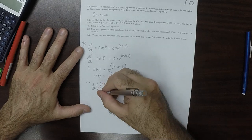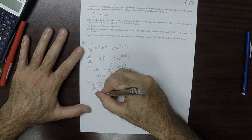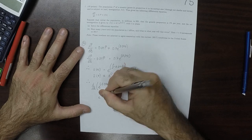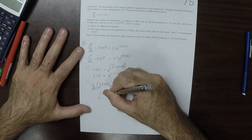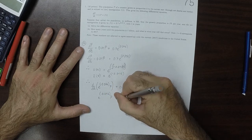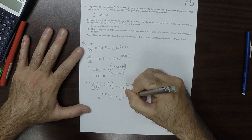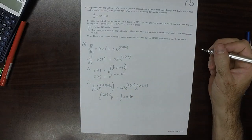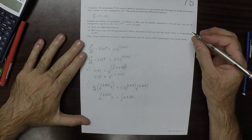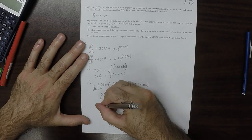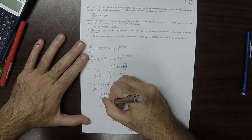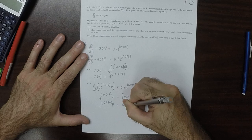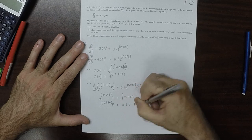So e^(-0.01t) times p should be the antiderivative of 0.7 dt. So e^(-0.01t) times p is 0.7t plus an unknown constant.